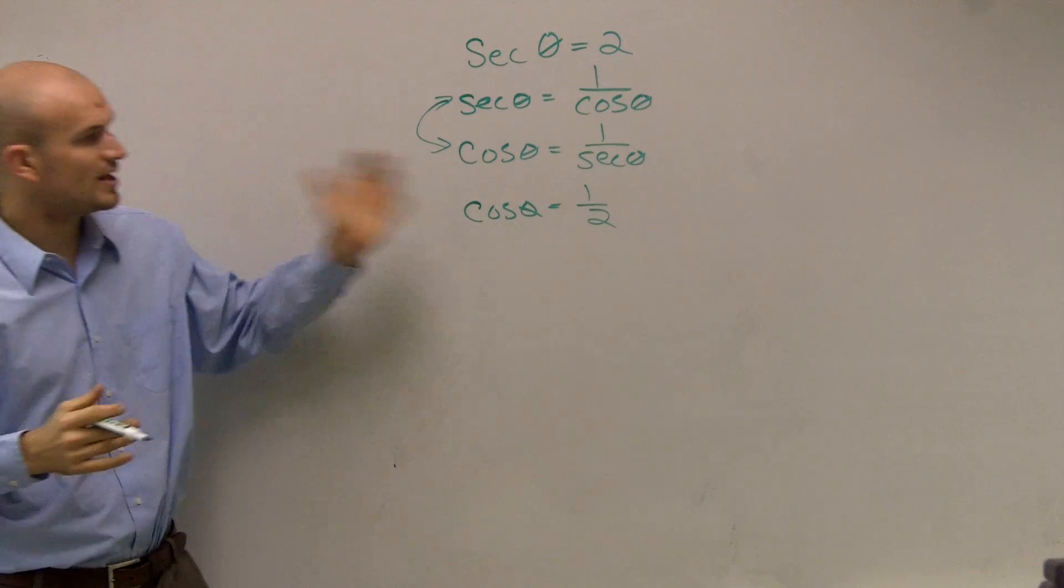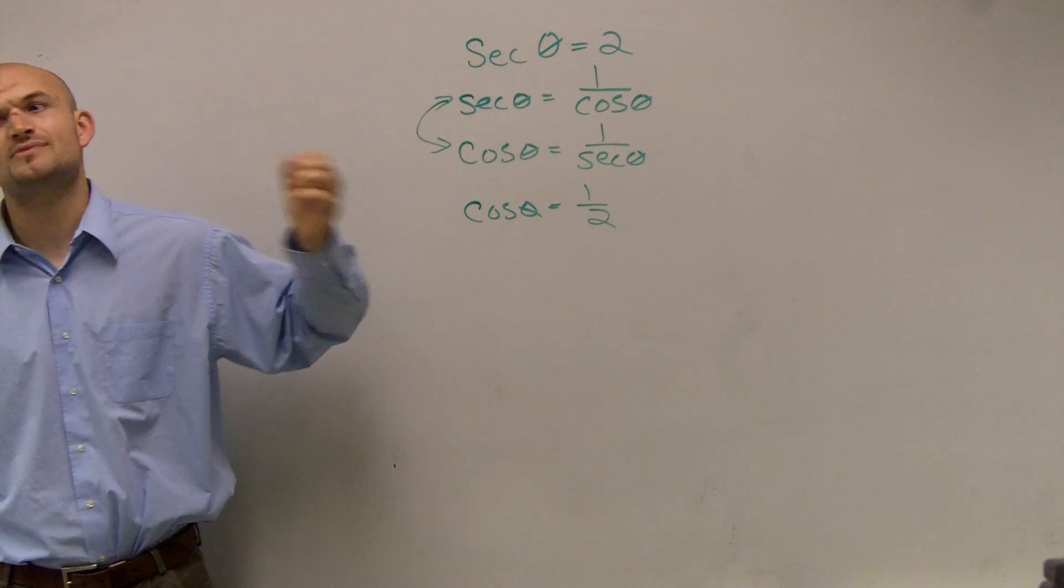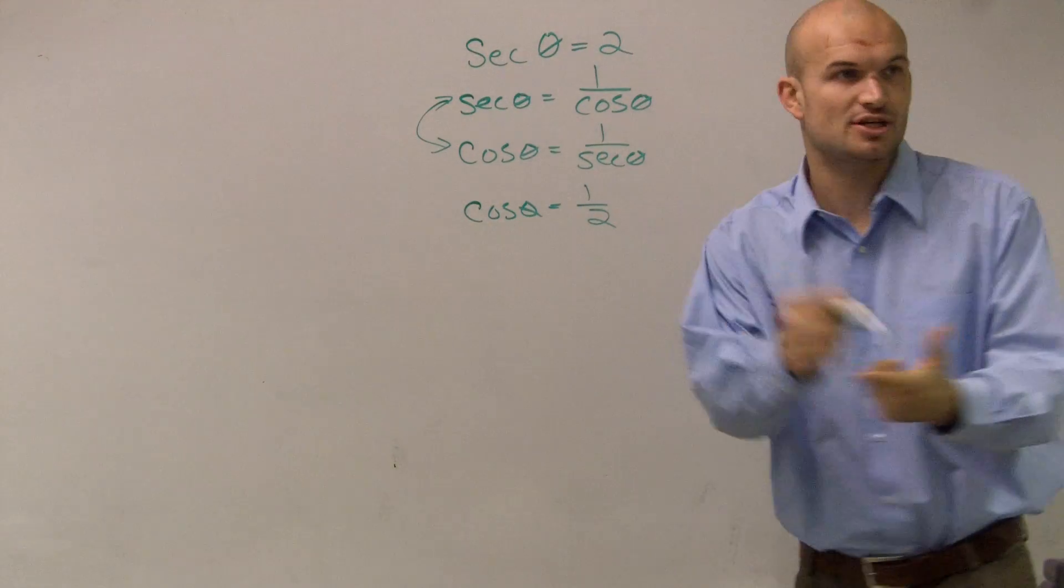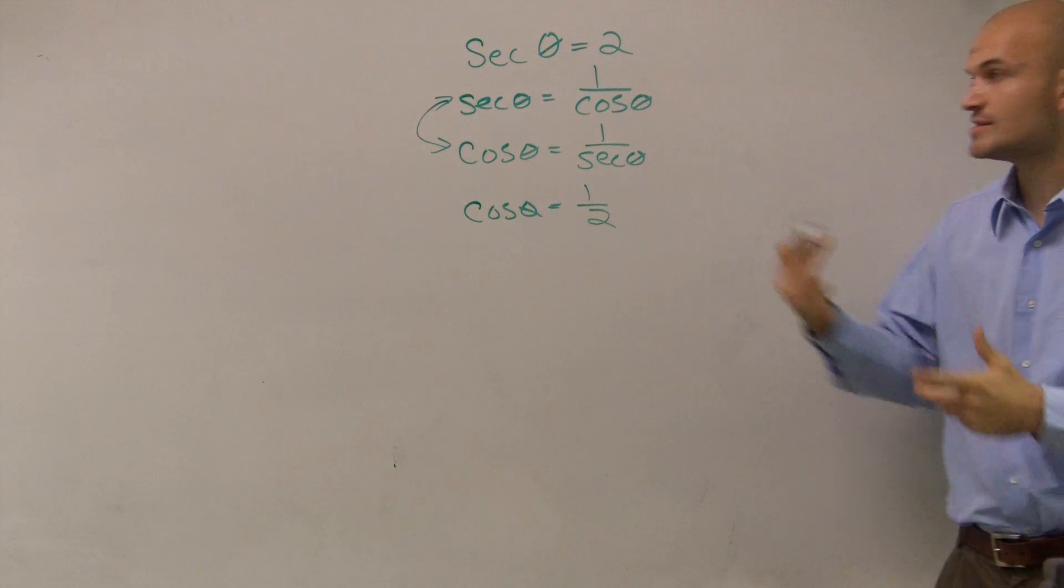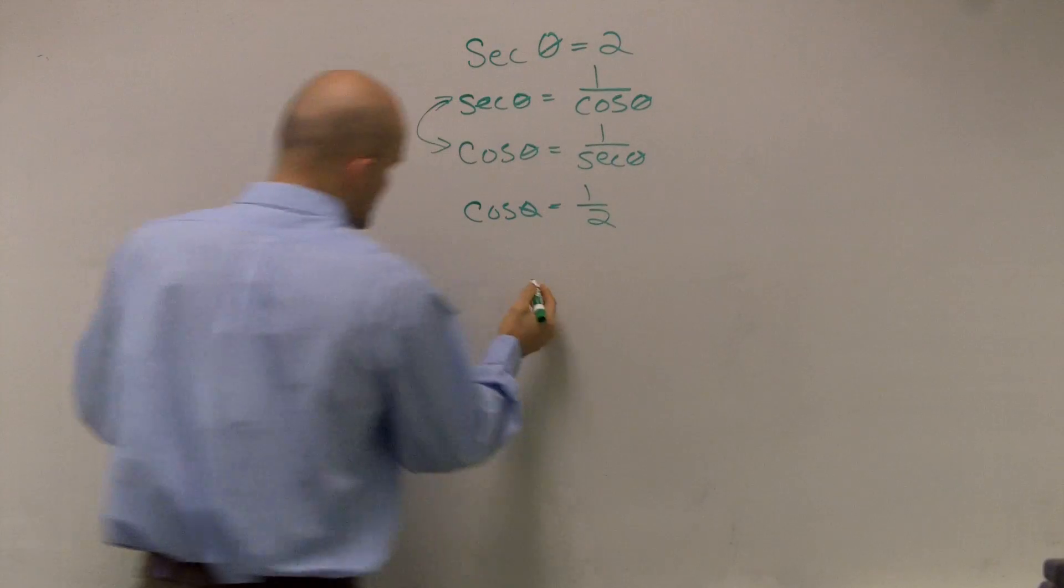Those are interchangeable. So what I did is, when we look at our unit circle, we're not very familiar with secant, cotangent, and cosecant. So the best thing to do is rewrite it in sine, cosine, and tangent. Let's look at our unit circle.